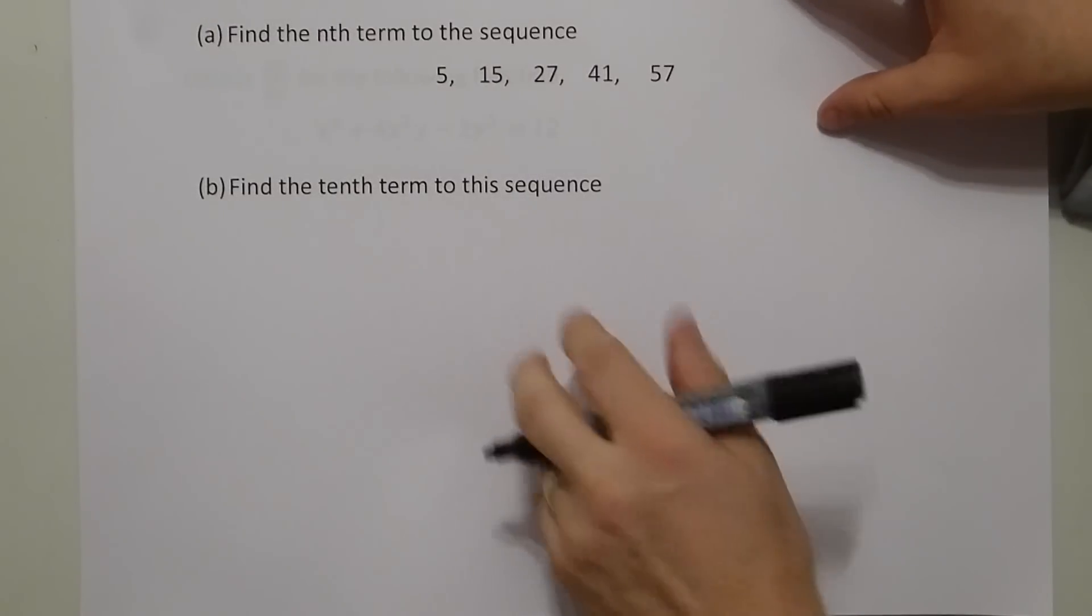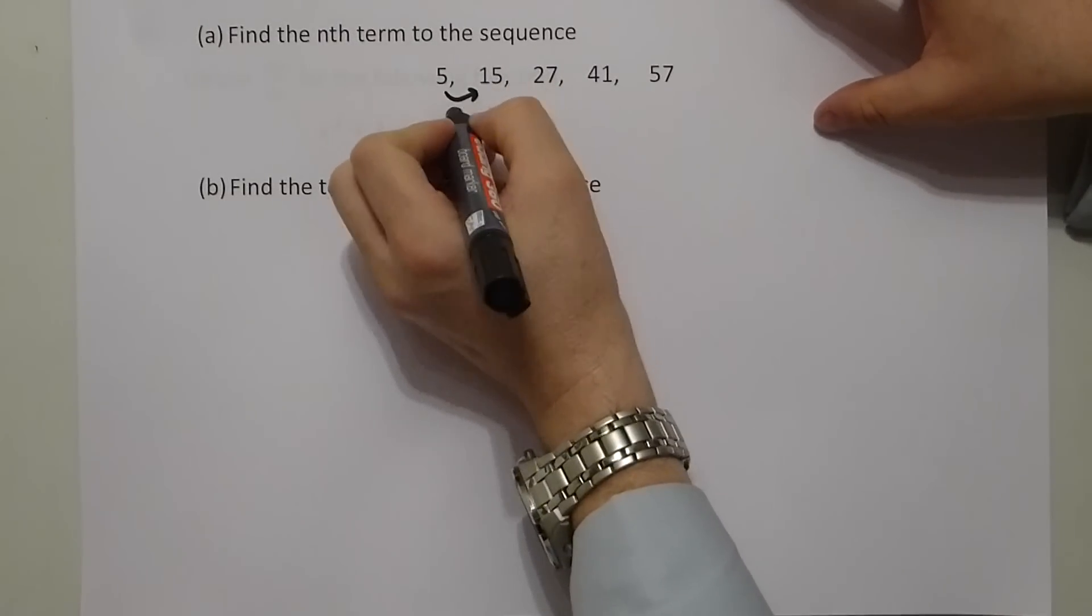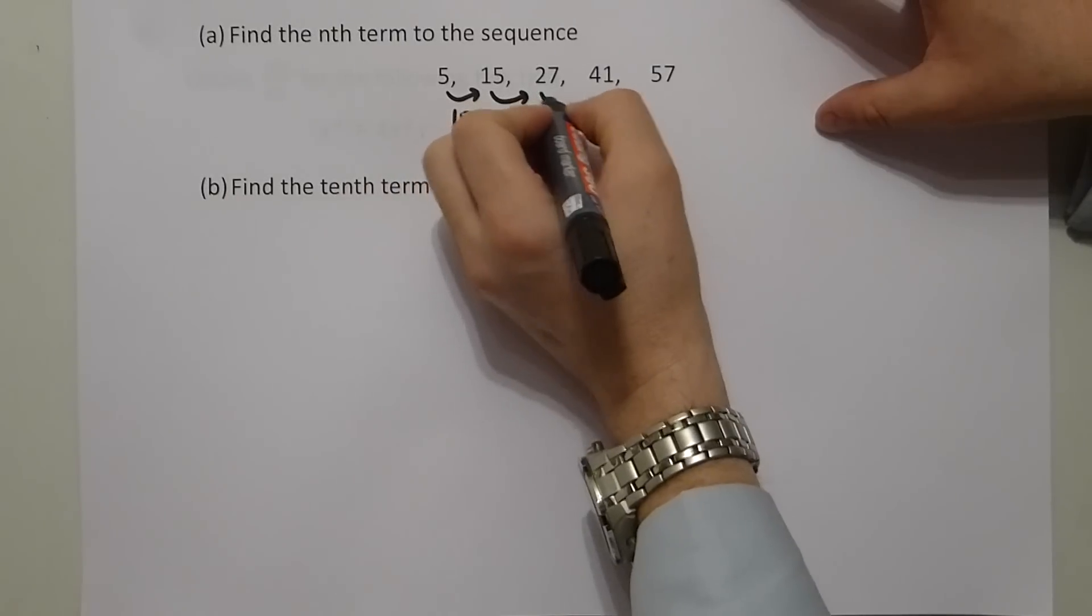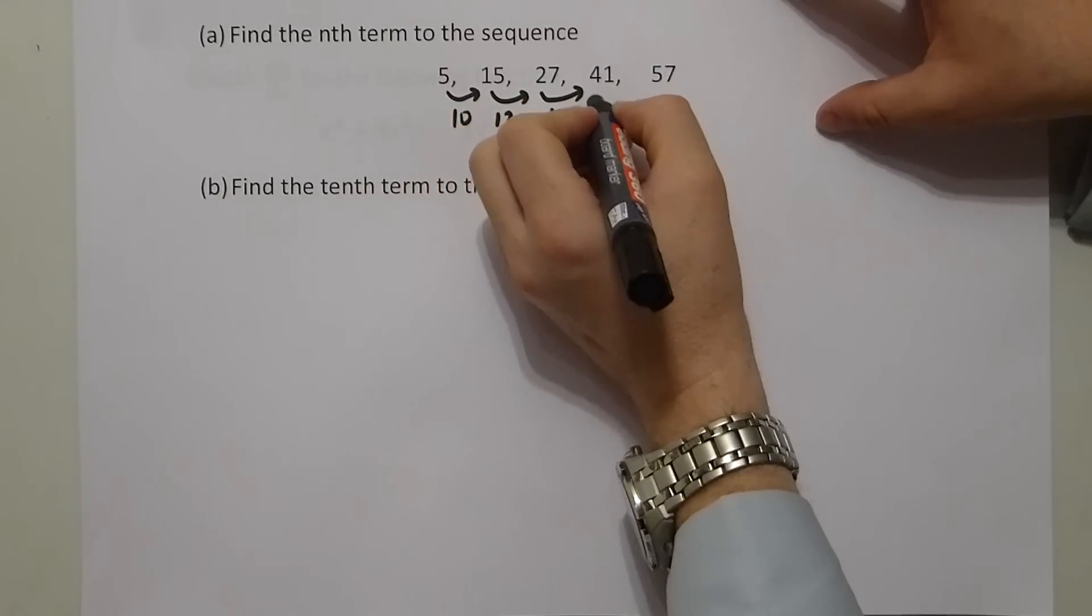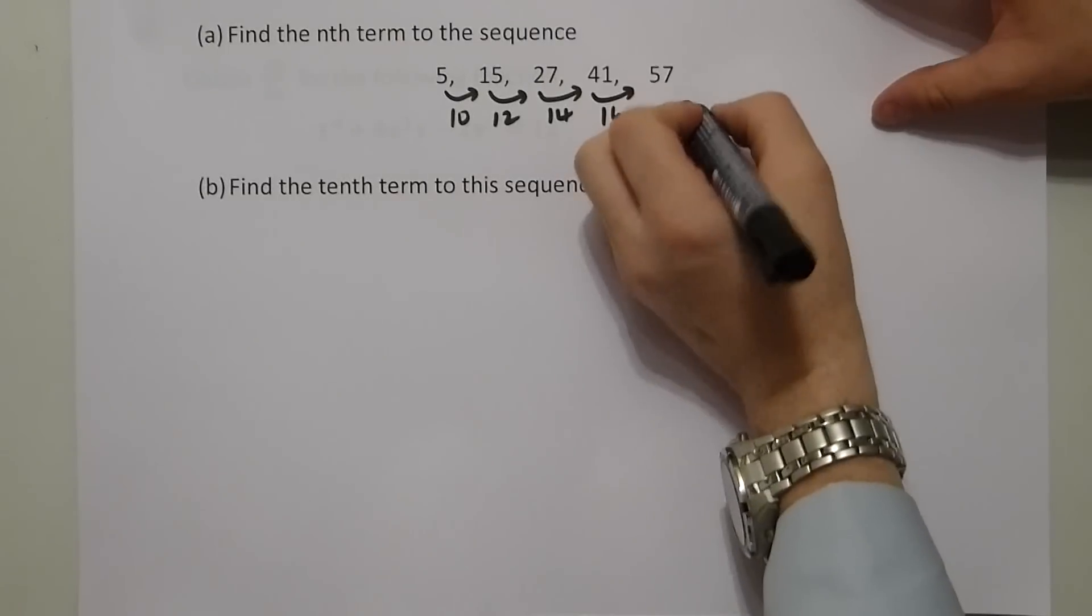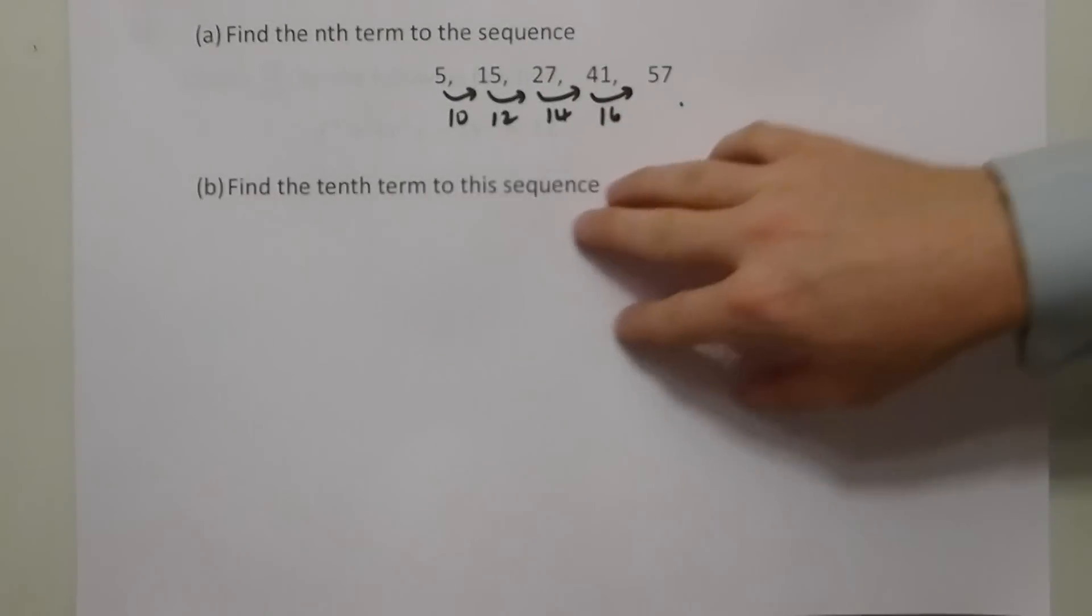Here we have a more complicated sequence. The sequence goes up by 10, then by 12, then by 14, then by 16. So it's not a linear sequence. It's not a quantity of n plus or minus a number. However, I notice that the differences go up by 2 each time. So that tells me it's something to do with n squared.